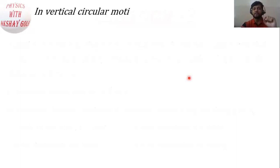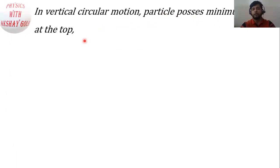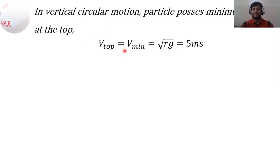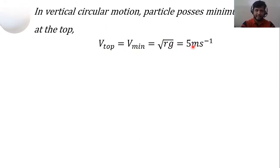When we are doing vertical circular motion, the particle possesses minimum velocity at the topmost position. So velocity at the top equals V_minimum, which equals the root of r times g. This gives us a value of 5 meters per second.